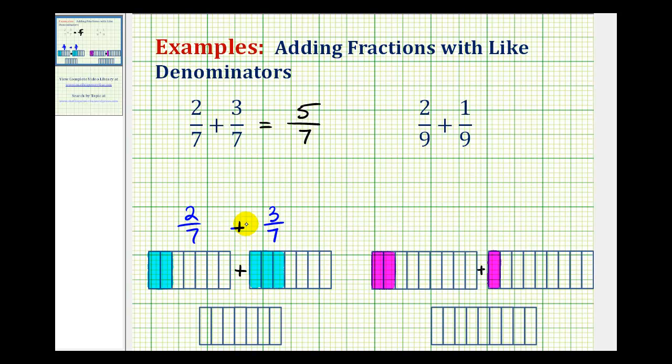And because the denominator is the same, we're adding pieces of the same size. Notice how we have a total of 5 pieces, where each piece represents 1/7. Therefore, the sum is equal to 5/7, as we found above.